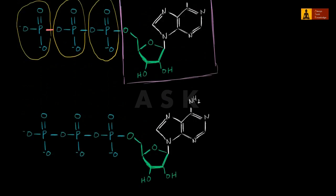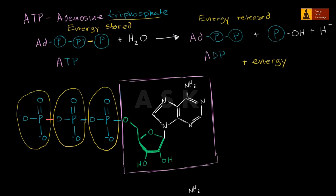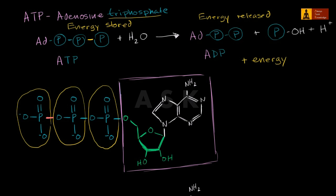In the previous video we talked about how an ATP molecule can, in the presence of water, undergo hydrolysis where one of the phosphoryl groups could be plunked off. And how that would release energy, because these electrons are going to be able to go into a lower energy state. These negative charges wanted to get away from each other, and once this is plunked off and they get into a more comfortable state, energy is released.